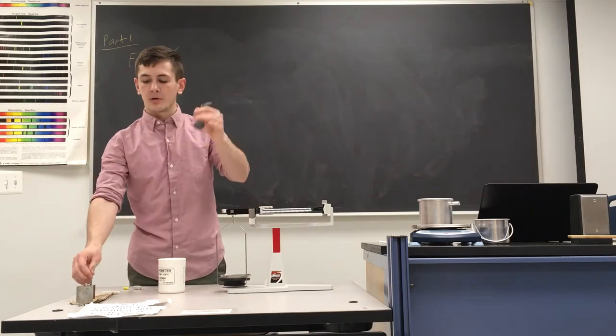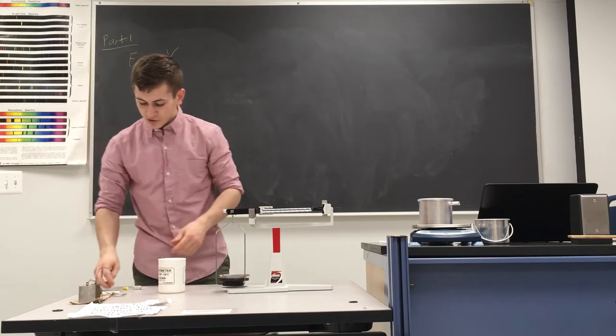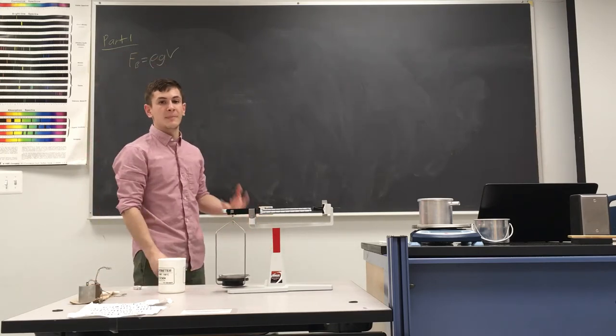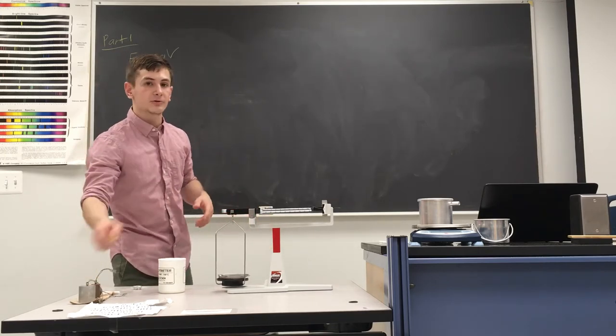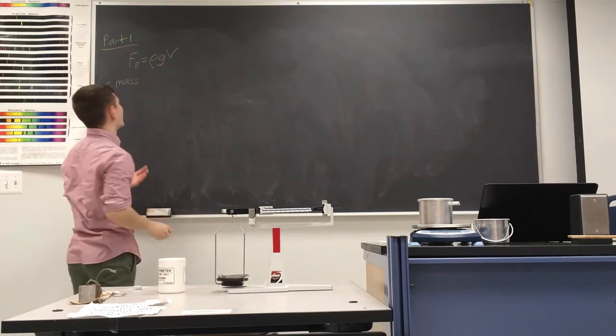So we need a lead ball, a copper cylinder, and an aluminum cylinder. To start, we need to take the mass of these three metals, and this is going to be called the dry mass.